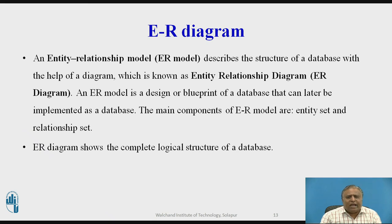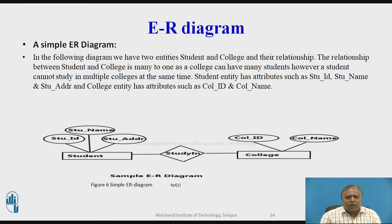Now we are going to see the ER diagram. ER diagram stands for entity relationship diagram. An ER model describes the structure of a database with the help of a diagram known as the entity relationship diagram. An ER model is a design blueprint of a database that can be implemented as a database. The main components of an ER model are entity set and relationship set. A simple ER diagram shows a student studying in college: student has attributes student ID, name, and address; college has attributes college ID and college name. The relationship between student and college is many-to-one, as a college can have many students but a student cannot study in multiple colleges at the same time.